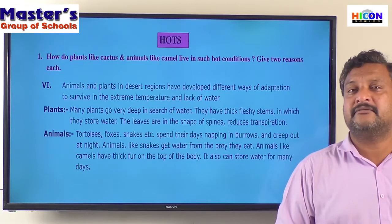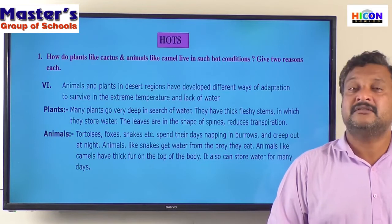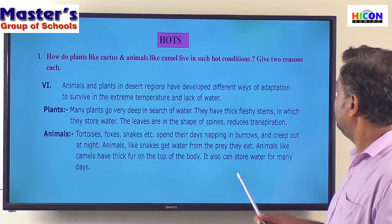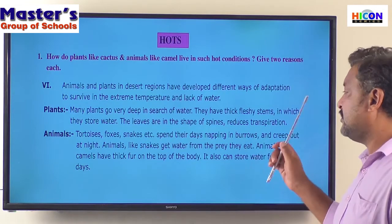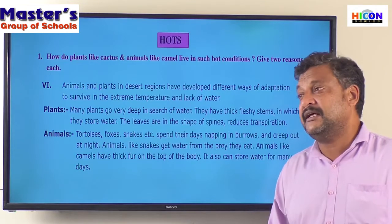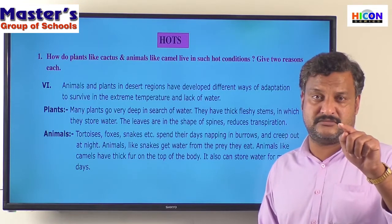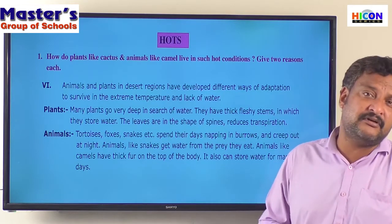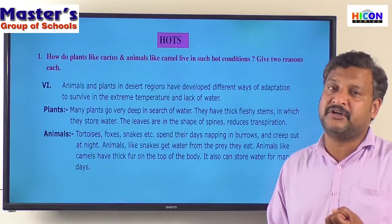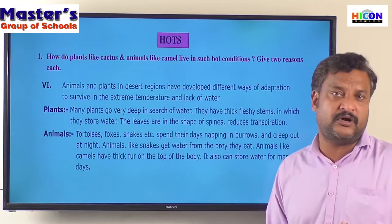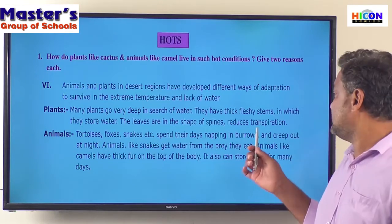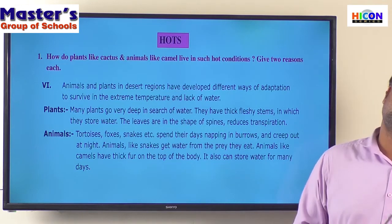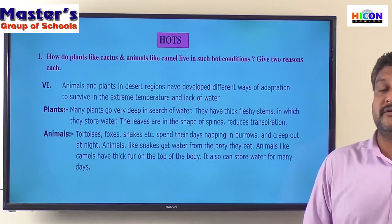Cactus do not have leaves; they have stems, and that stem is actually in the shape of a leaf. They store water in thick fleshy stems, and their leaves are converted into thorns. Why are leaves converted into thorns? First, thorns give them protection from animals who are always in search of water. Second, it reduces transpiration — that is, the evaporation of water from plants.